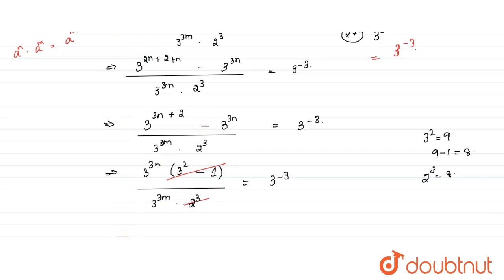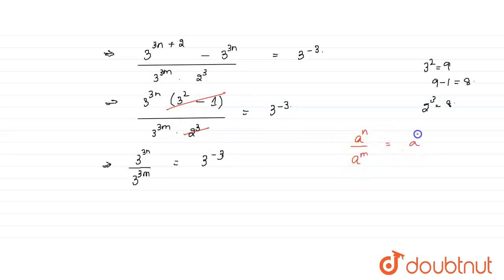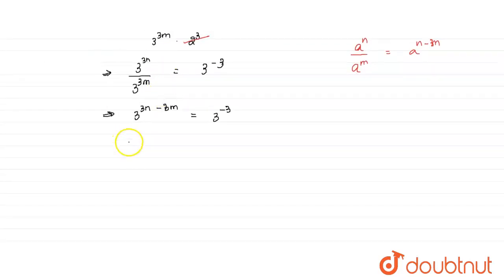We are left with 3 to the power 3n divided by 3 to the power 3m equals 3 to the power minus 3. Using the identity a to the power n divided by a to the power m equals a to the power n minus m, since the bases are the same, we subtract the powers: 3 to the power 3n minus 3m equals 3 to the power minus 3. Equating the powers gives 3n minus 3m equals minus 3.